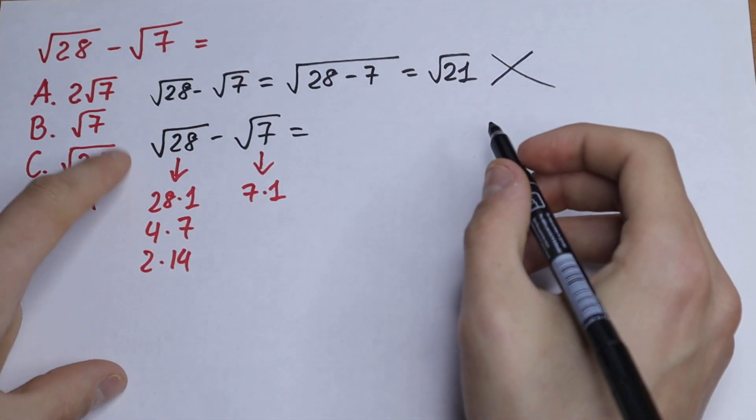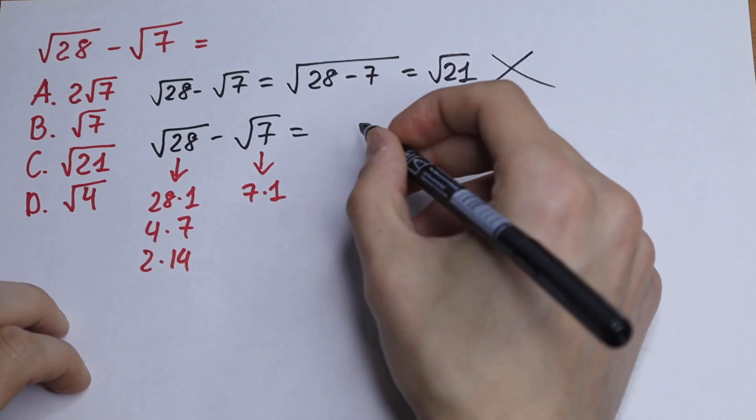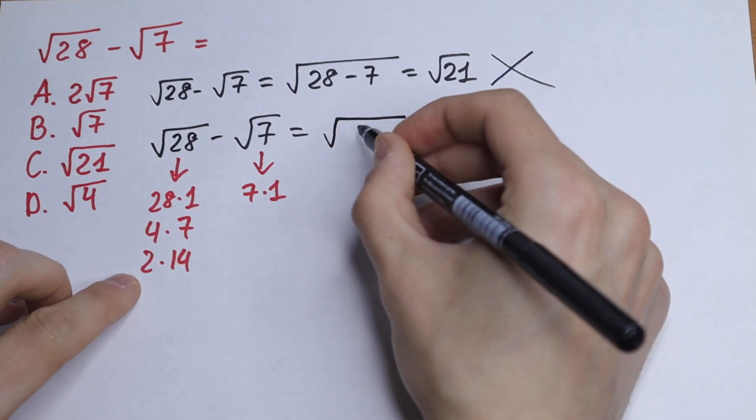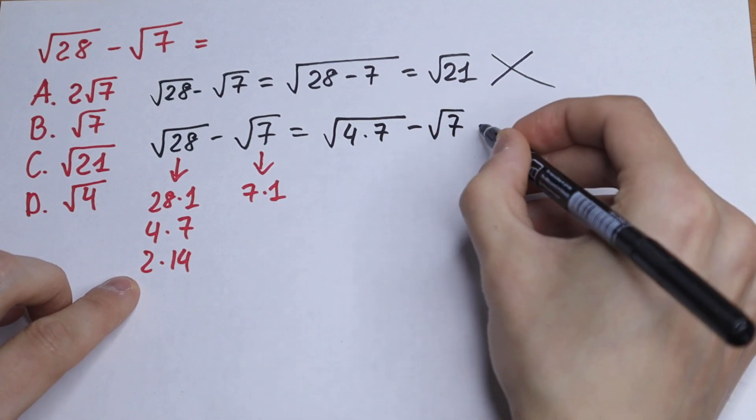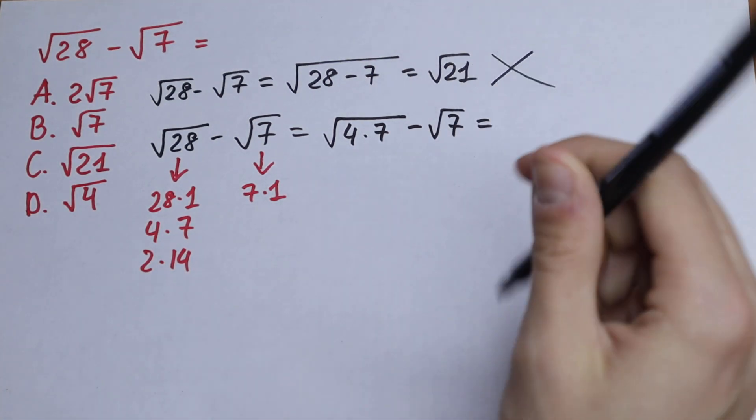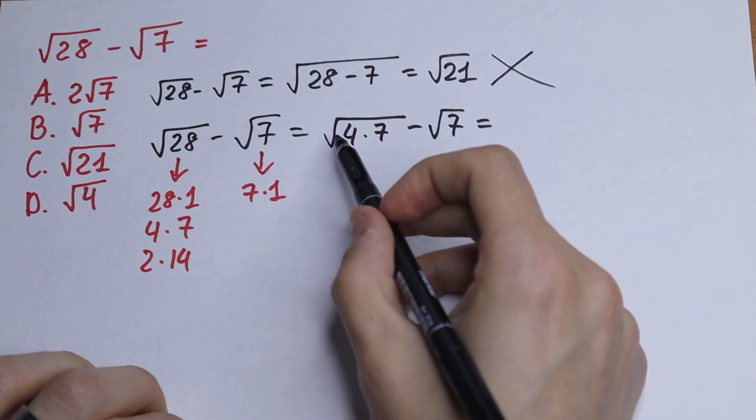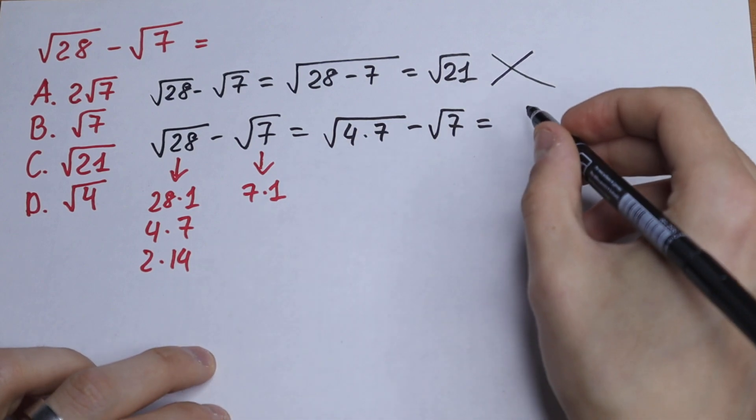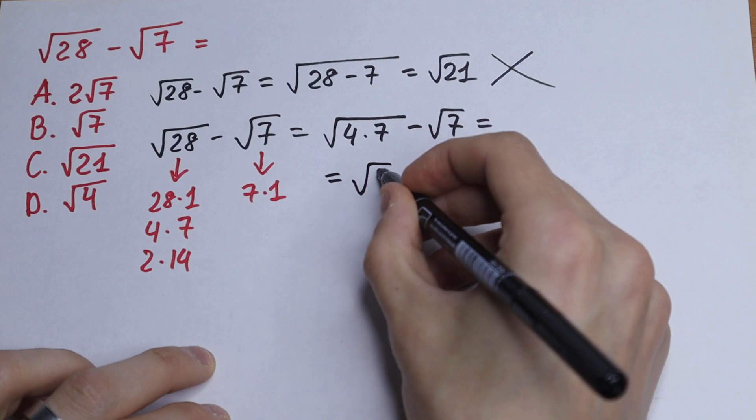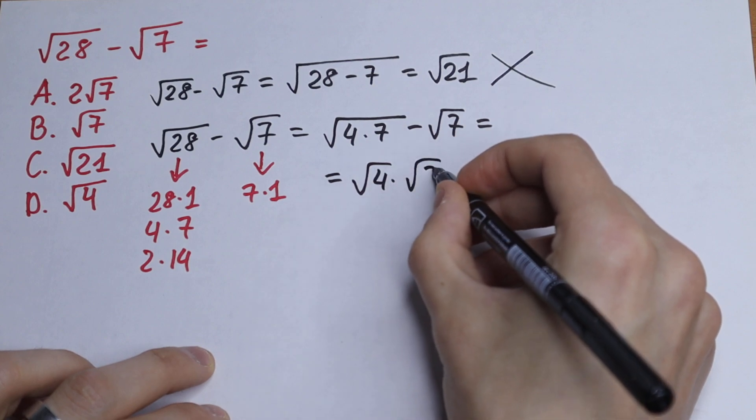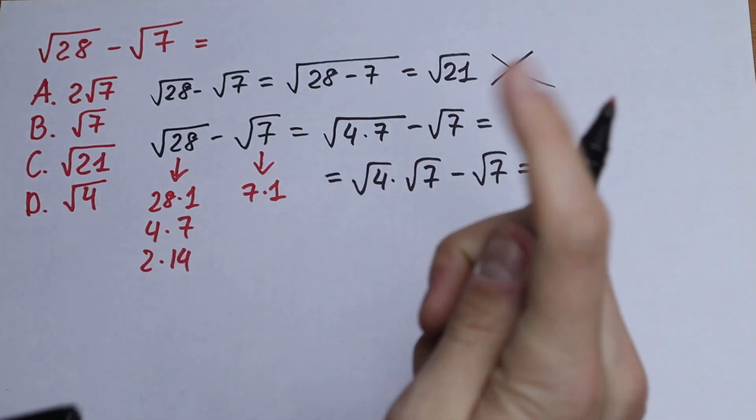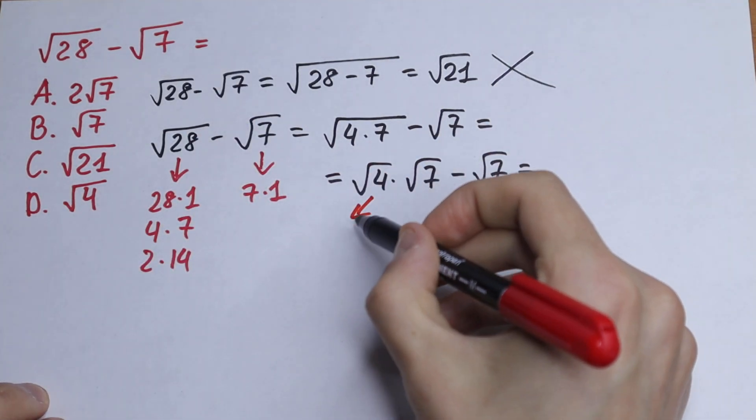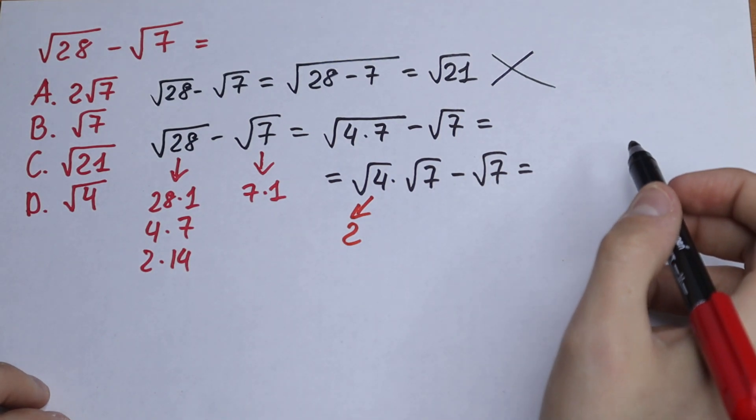So let's write this 28 as 4 times 7. So square root of 4 times 7 minus square root of 7 equal to... As you can see right here, we can write this using the rule. We can write this as square root of 4 times square root of 7. Square root of 4 equals 2, which is really good for us.